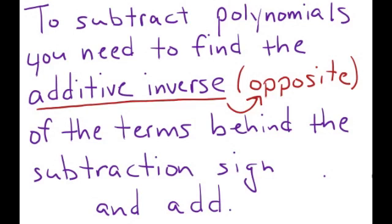A good example would be if you have a positive 5, the additive inverse of that is a negative 5. If you have a negative x squared, the additive inverse of that is x squared. So all you're doing is taking the opposite. You're going to take the opposite of whatever sign it has.